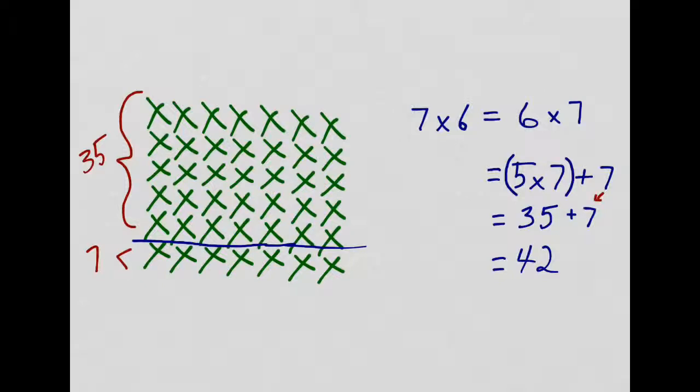Now, to find my sum, or my final product, I take the sum of those two parts. That means I add them together. And 35 plus 7 is 42. Hopefully, that demonstration with the array makes that more clear.